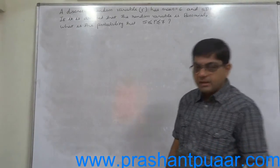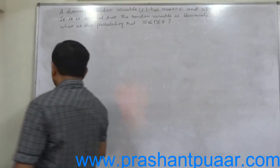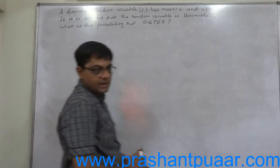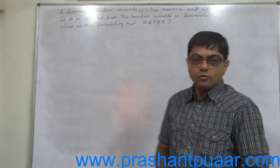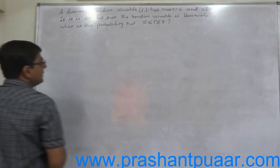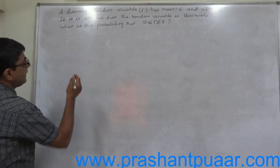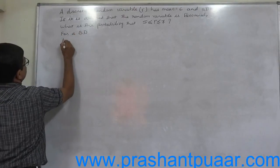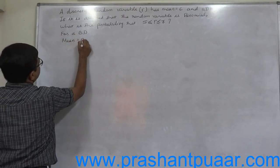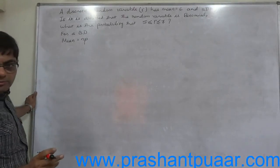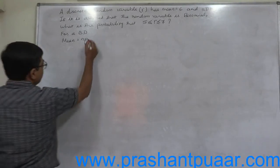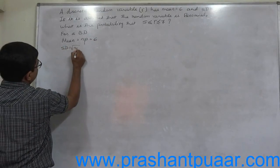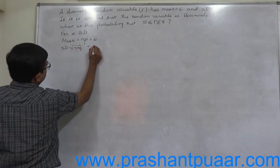Now the random variable r is binomial. So to calculate any probability, first we should have n, p, and q. We have to find n, p, and q because all these three are absent. But we have mean. And in a binomial distribution, mean is always np, and that is given to be 6. Standard deviation is always √(npq), that is given to be √2.